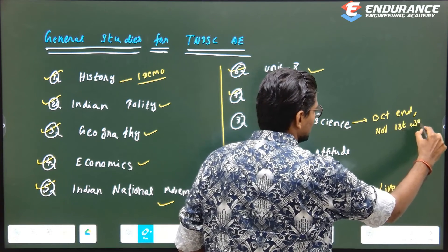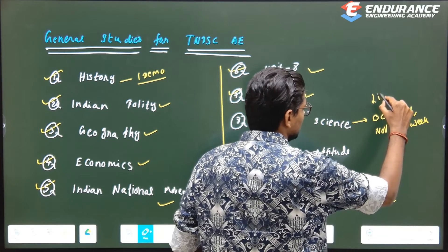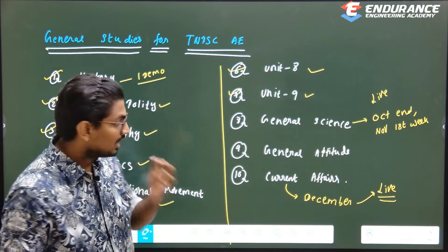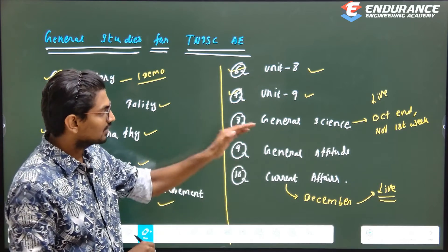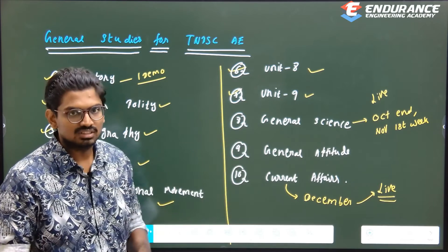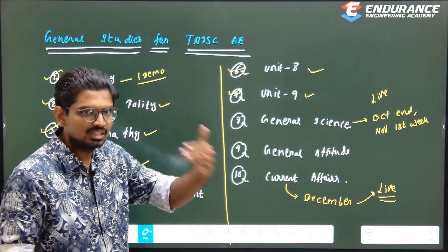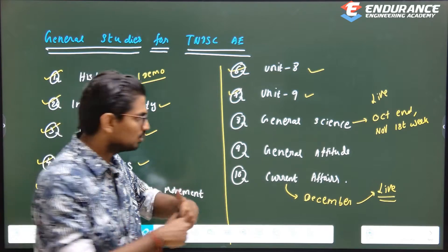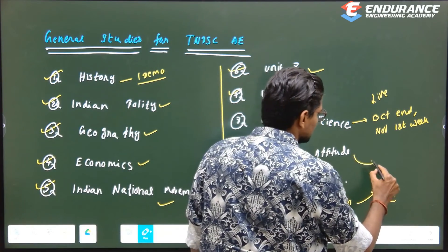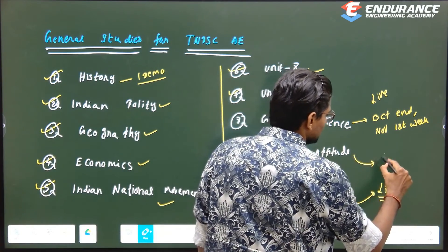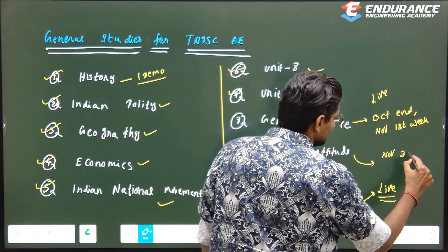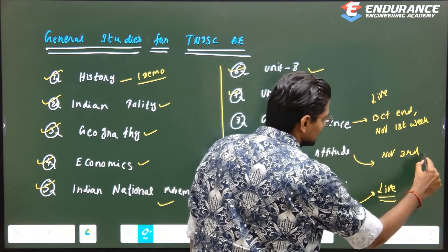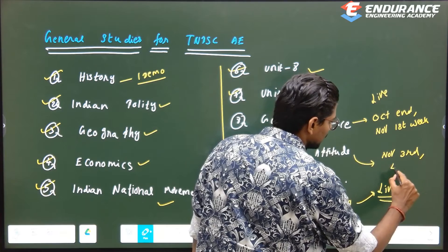We are starting General Science as a live session, so you can attempt it live. General Aptitude will begin once General Science is completed — either Diwali week or November 3rd to 4th week, depending on how quickly General Science is completed.